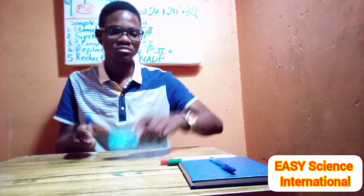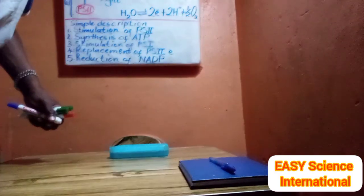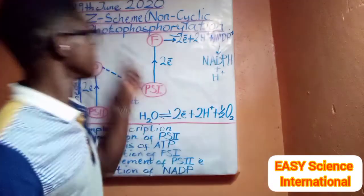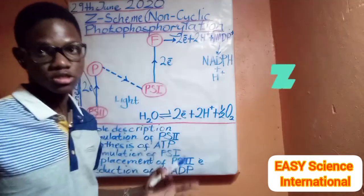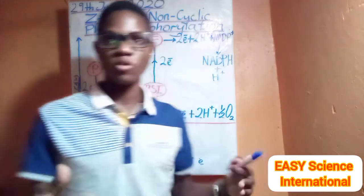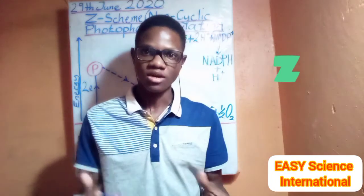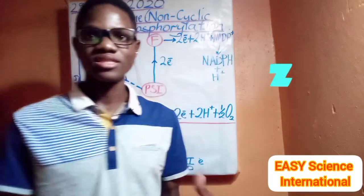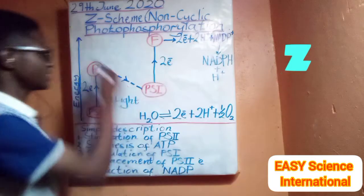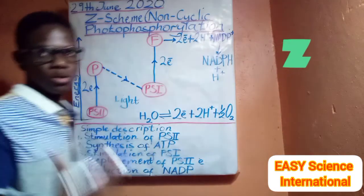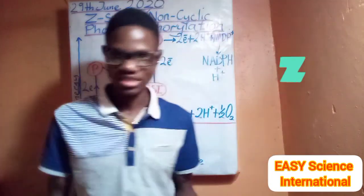Stay tuned to Easy Science International, let's go. Today's topic is the Z-scheme, or non-cyclic photophosphorylation. Last time we looked at cyclic photophosphorylation, and now we want to go deeper into another type of photophosphorylation known as non-cyclic photophosphorylation. It is called the Z-scheme because its graphical representation takes the pattern of a Z — like an inverted Z. Today we want to look at it and understand it.